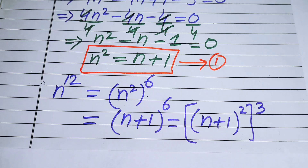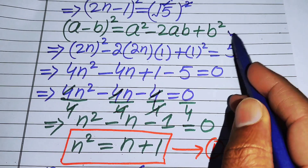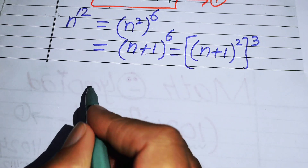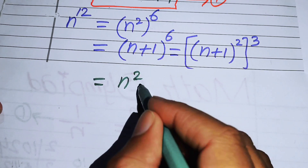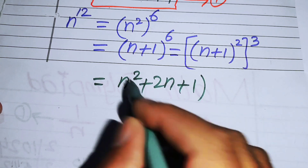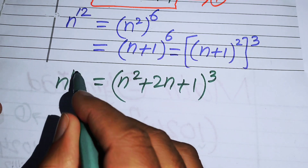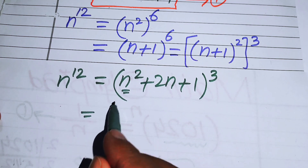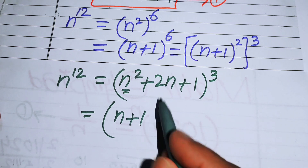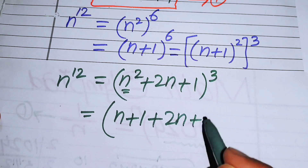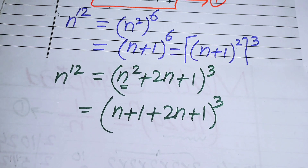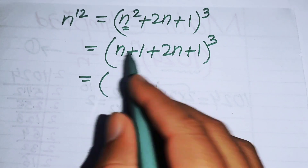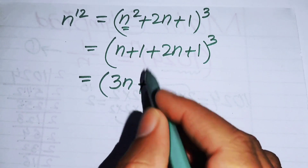We write (n + 1)^6 as ((n + 1)²)^3. Expanding (n + 1)² using the square identity gives n² + 2n + 1. Substituting n² = n + 1, this becomes (n + 1) + 2n + 1 = 3n + 2. So n¹² = (3n + 2)^3.